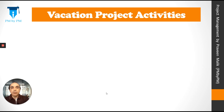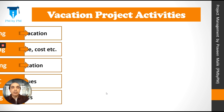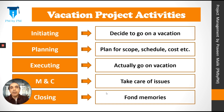For our vacation project we'll do many activities. These activities can be categorized under five heads or five groups. These groups are initiating, planning, executing, monitoring and controlling, and closing. For example, initiating might include the decision to go on a vacation and the decision for the place.